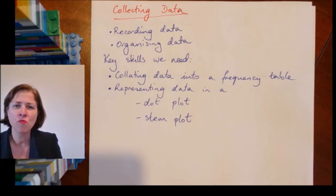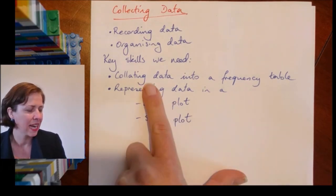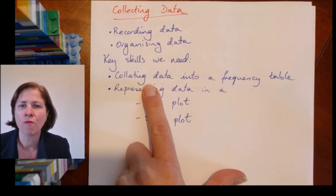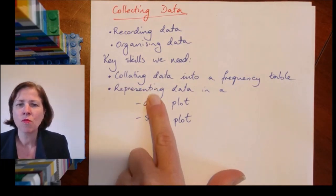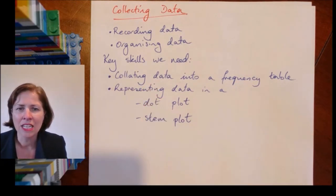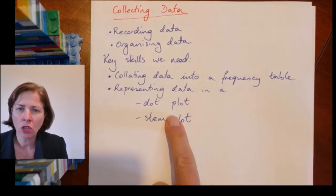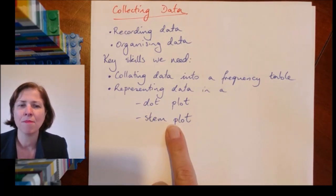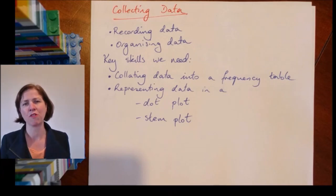There are two main key skills that we're looking at today. The first one is collating our data into a frequency table, and the second one is representing our data in two ways. We're going to use a dot plot and we're going to use a stem plot, which we'll also call a stem and leaf plot.